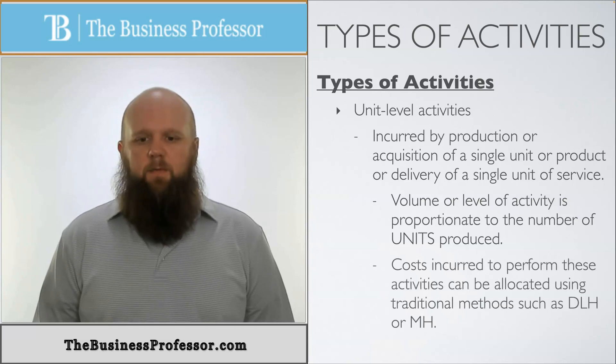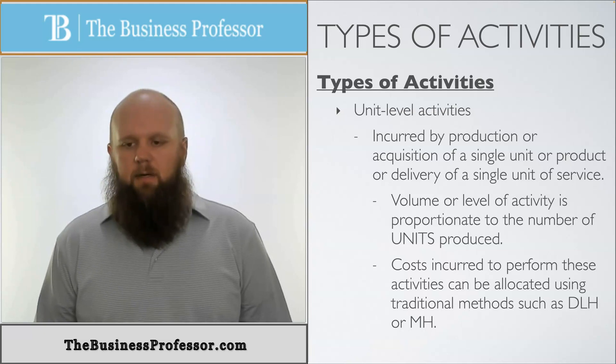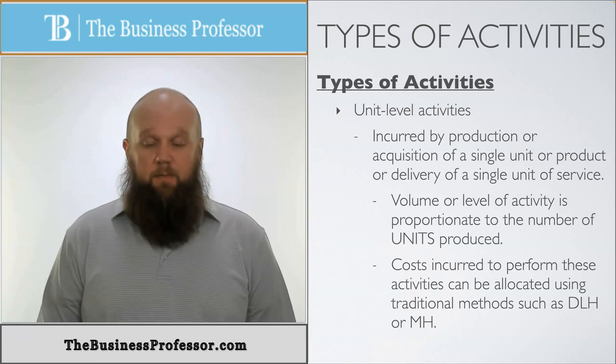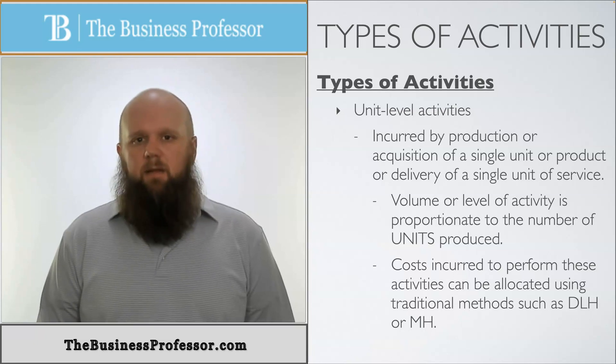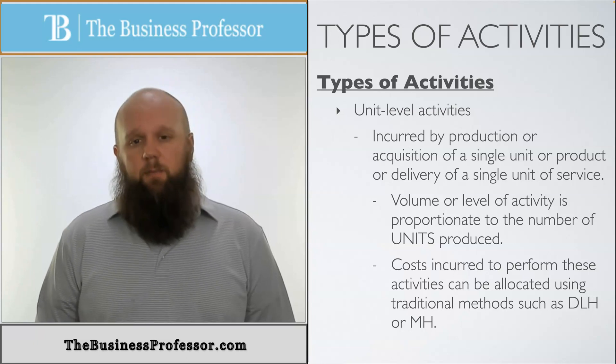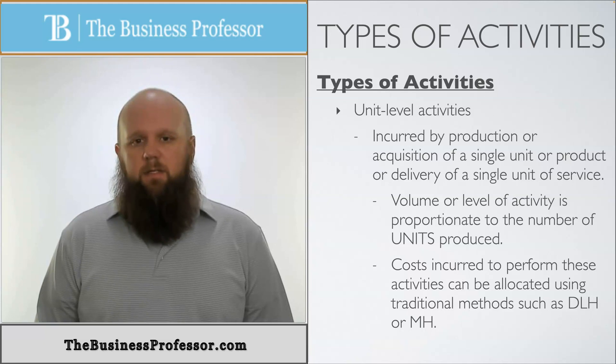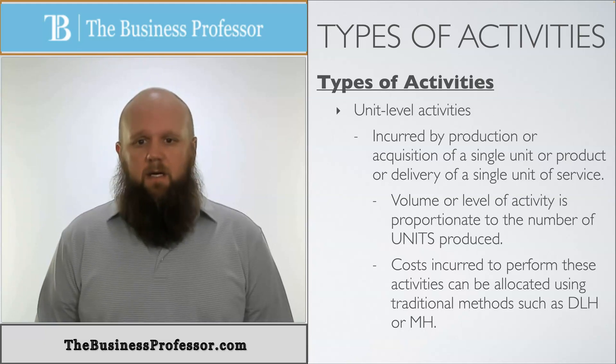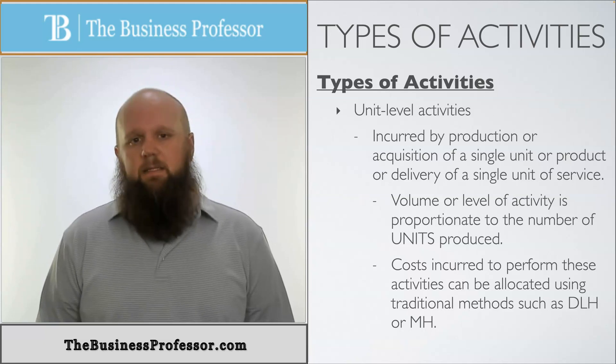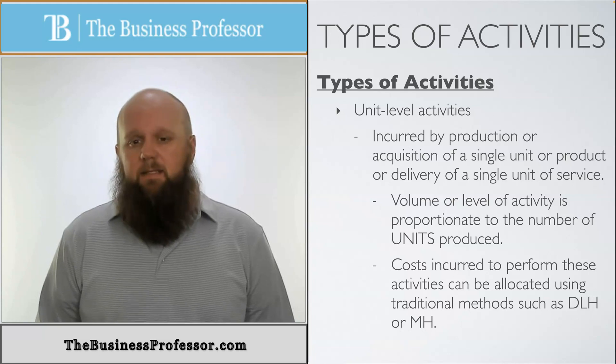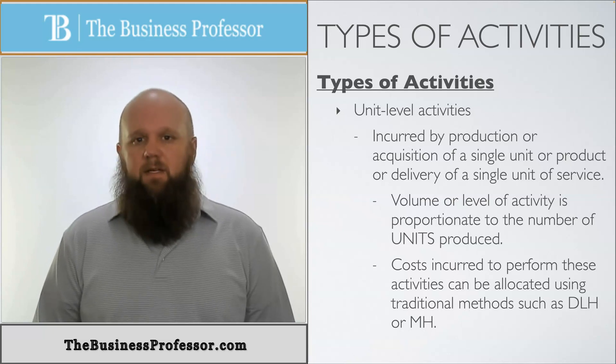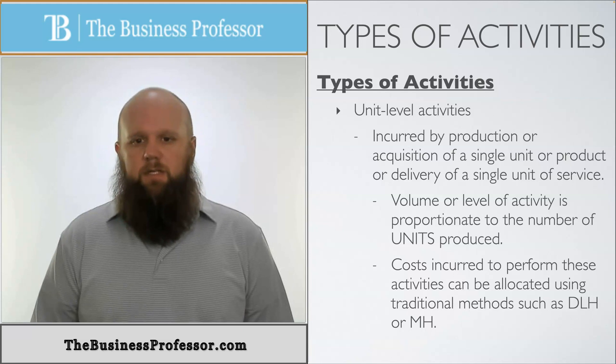Costs incurred to perform these activities can be allocated using the traditional methods of direct labor hours or manufacturing machine hours. The traditional approach of costing assumes that all manufacturing overhead costs fall under unit levels of activity, and that's just not the case. So let's look at the other types that doesn't take into consideration when we're dealing with traditional.